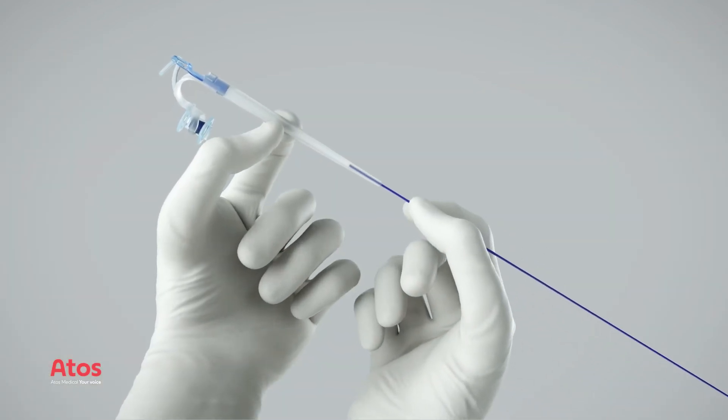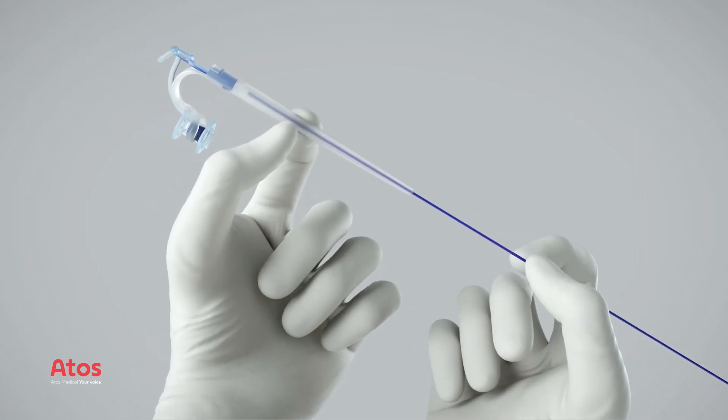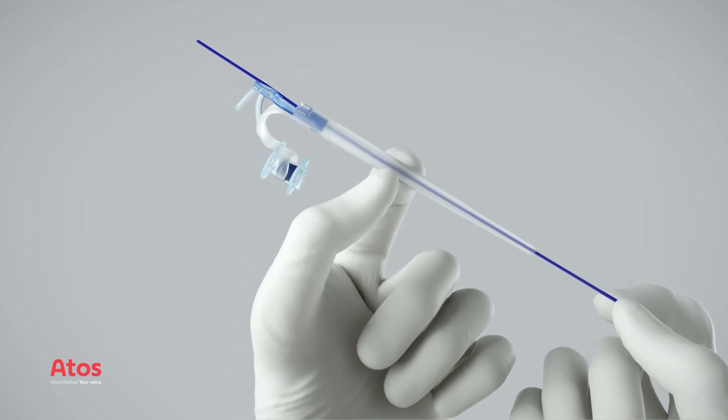Insert the guide wire into the puncture dilator and push the guide wire until it extends approximately 10 cm through the dilator exit hole.